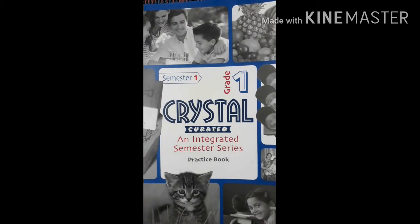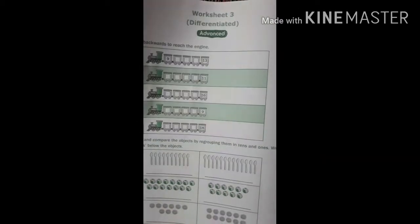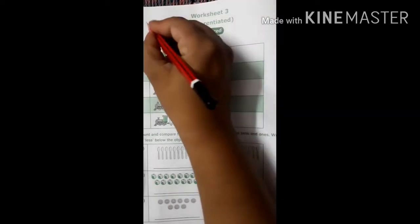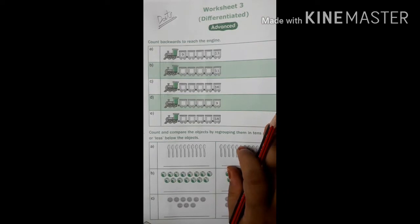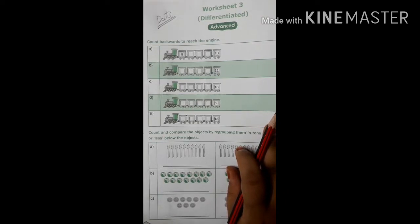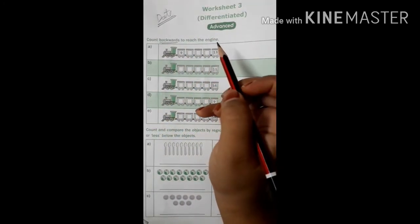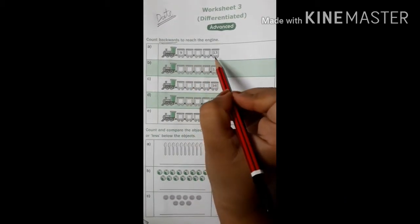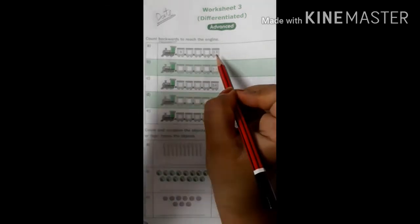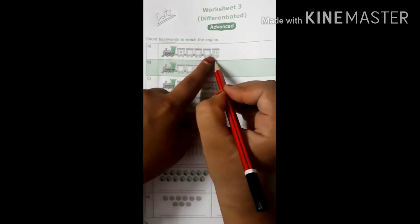Good morning students. Open your integrated semester series maths, page number 36, worksheet 3 advanced. Write down the date here. Read the first question: count backward to reach the engine. What does backward mean? Backward counting means you have to start from a number and go back. Observe this.